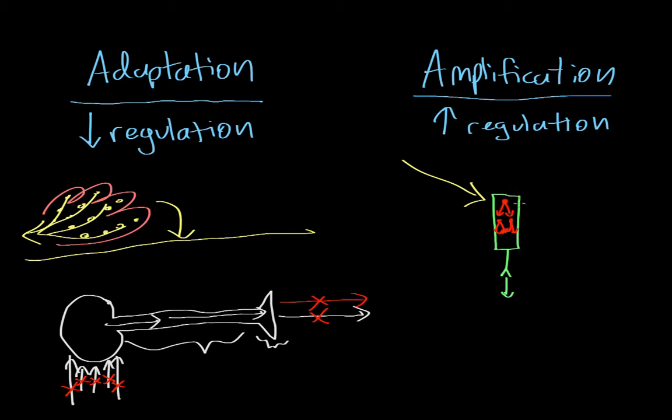When this cell fires an action potential, it can actually be connected to maybe two cells. These two cells then also fire an action potential to two more, and so on and so forth.